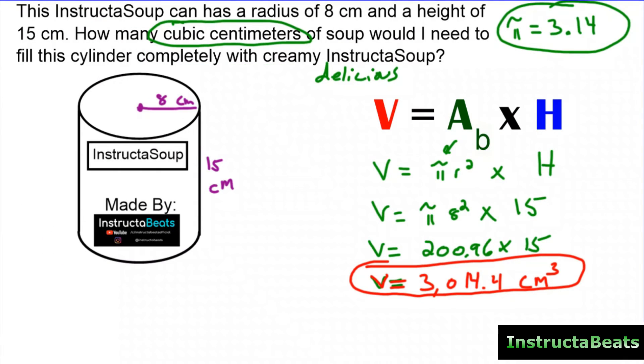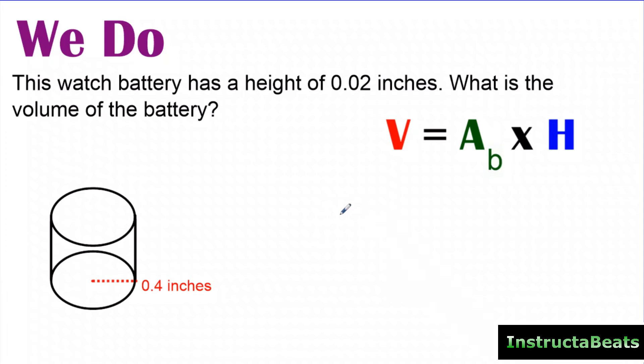Let's take a look at a We Do problem now. So here again, we have a watch battery here. It says this watch battery has a height of two hundredths of an inch. What is the volume of the battery? When we're trying to find volume, we want to figure out how many cubic units fill in a shape. So we want to find that bottom layer by using our area formula to figure out, what is the area of the base of this cylinder?